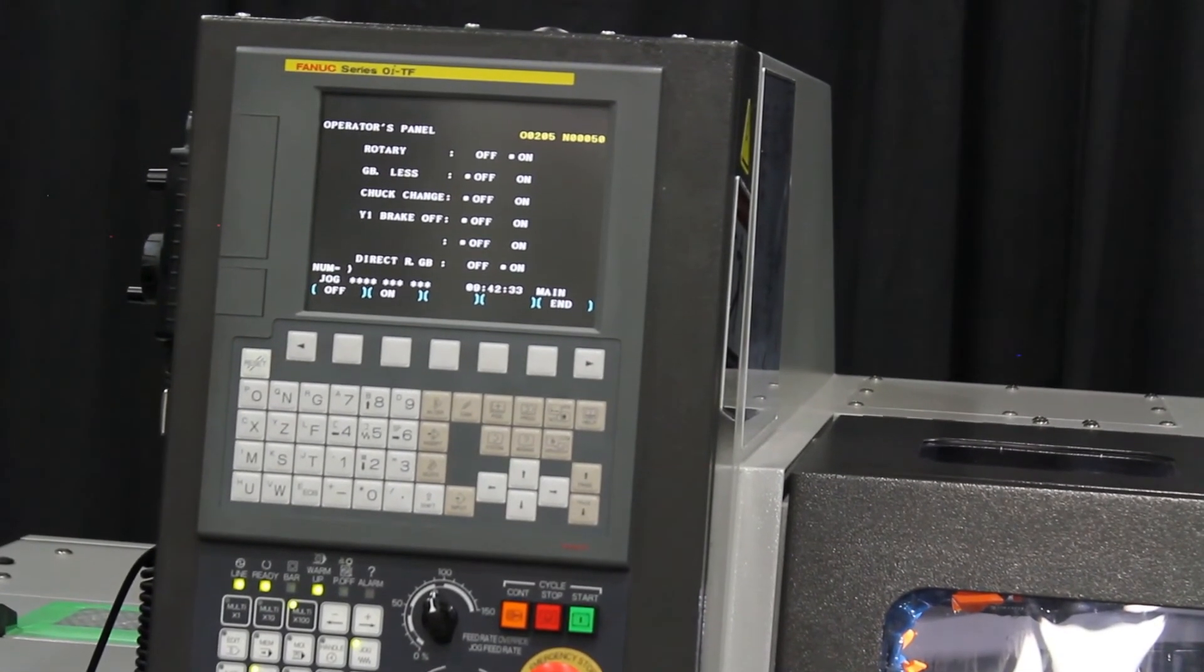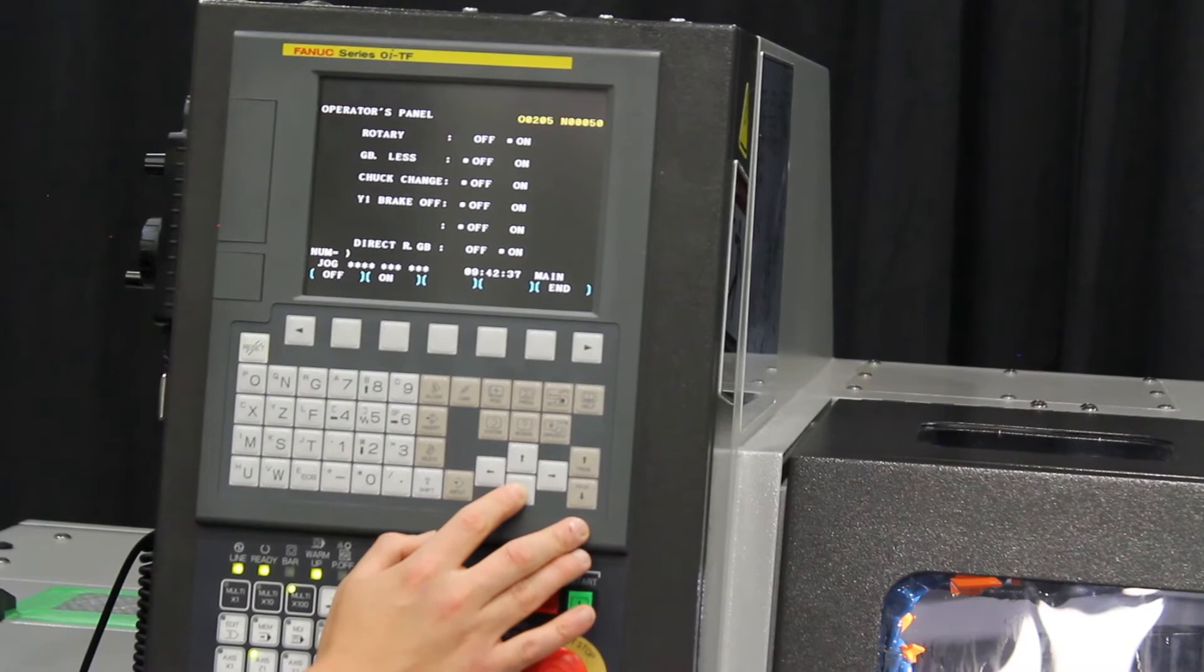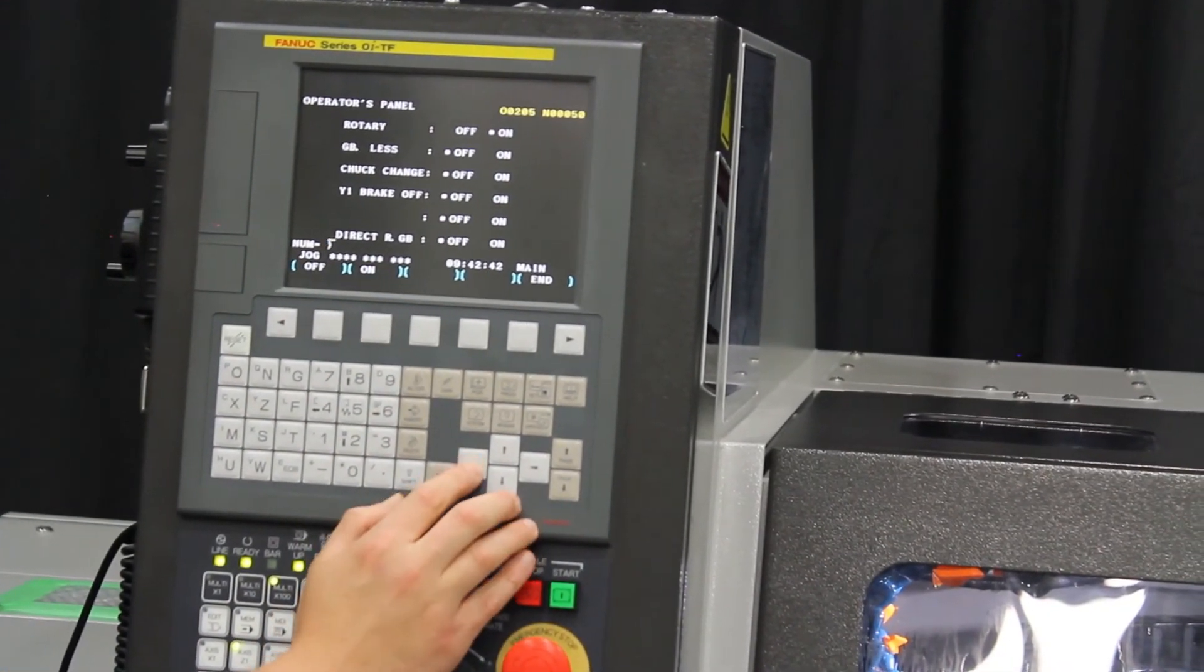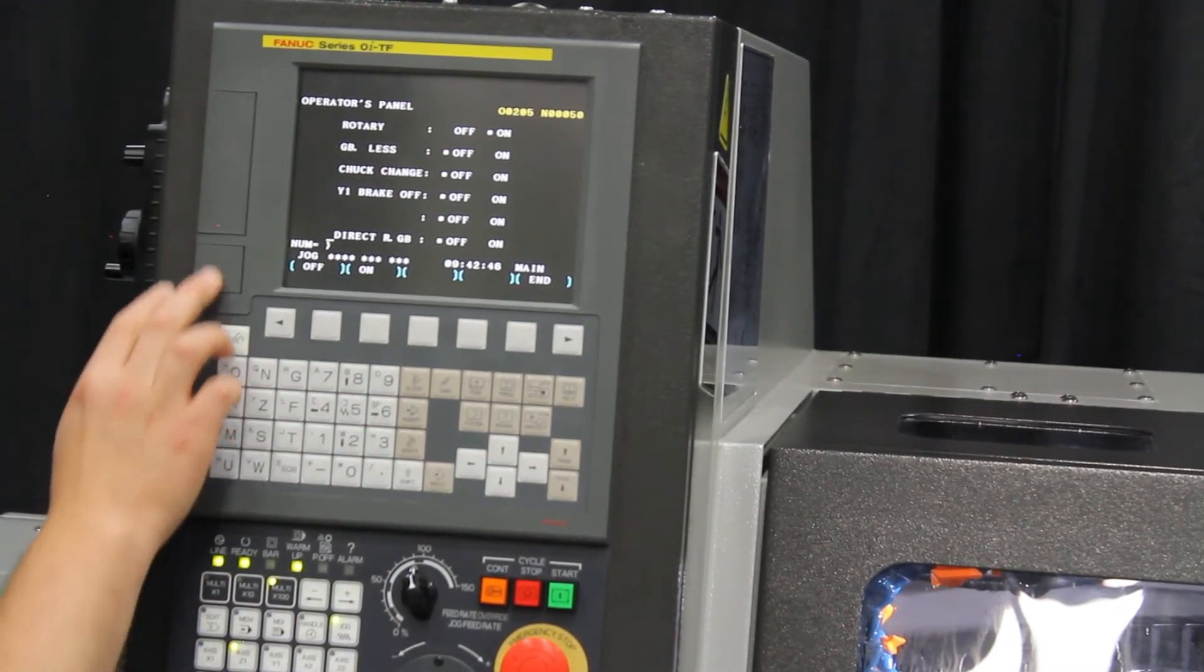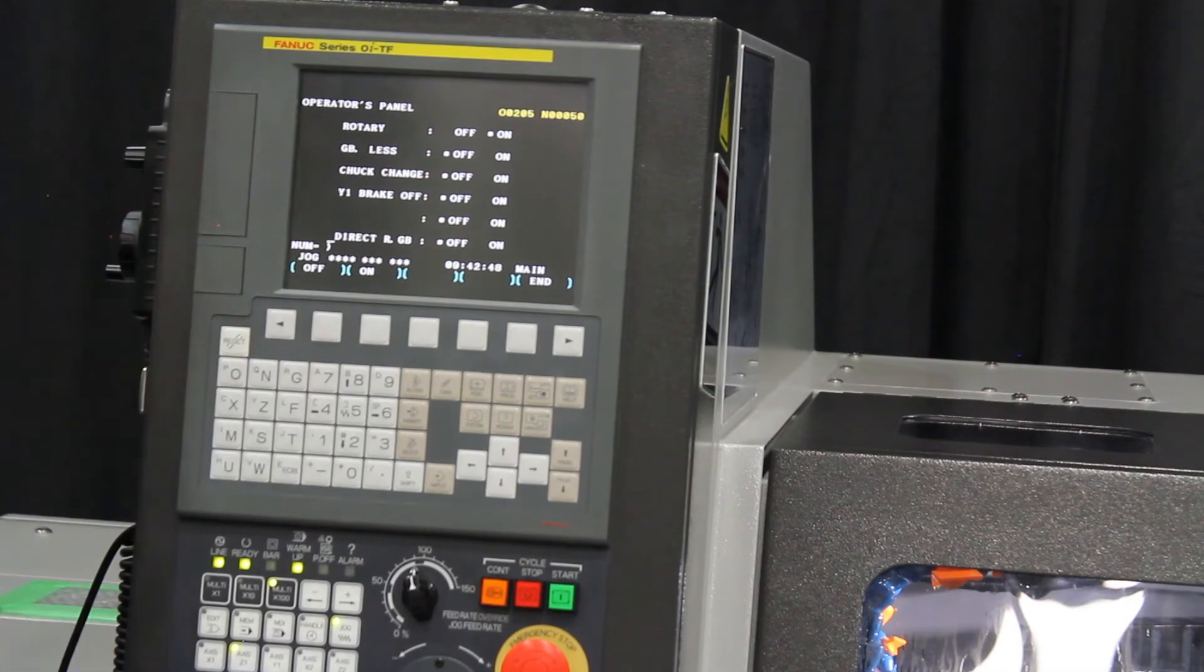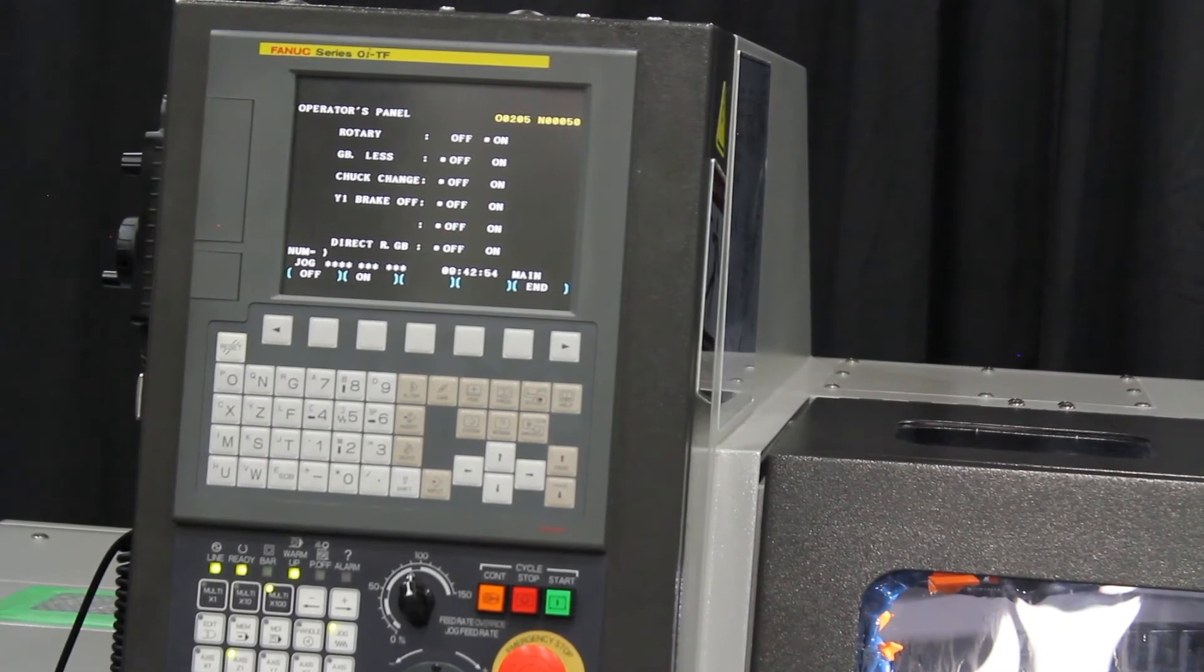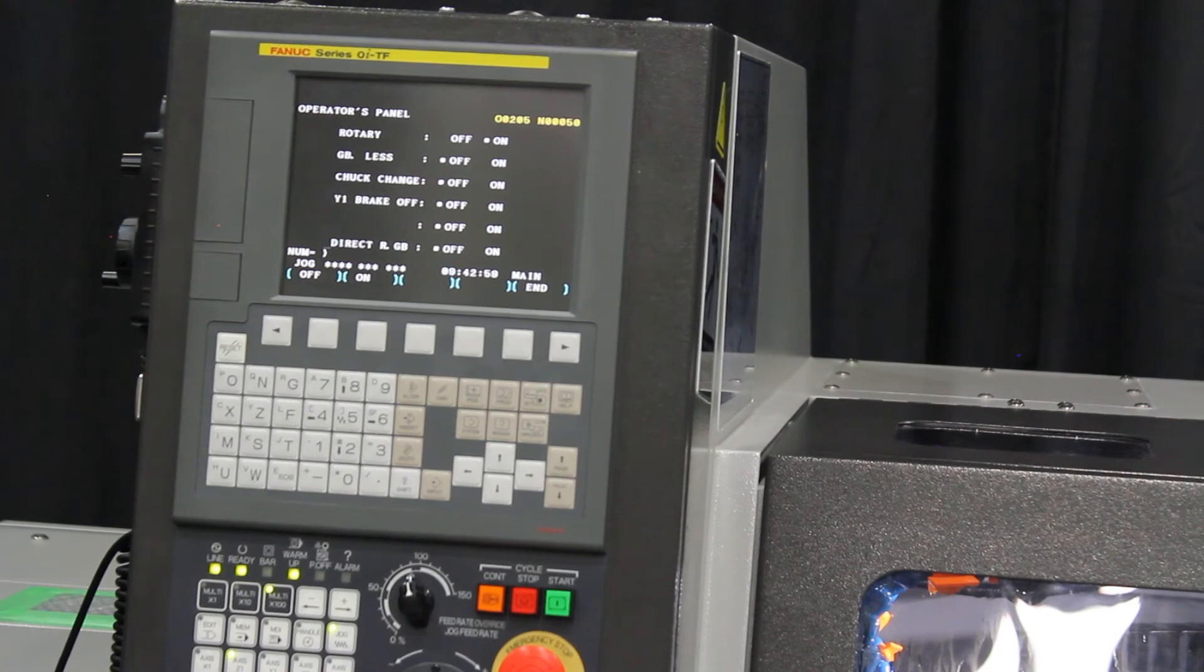In order to go into the cage driven guide bushing we have to go down to the direct rotary drag bushing and we simply turn it on. At that point the only option you will have to turn on is going to be rotary guide bushing. You are going to see that this is going to minimize the stroke and accommodate the unit to the 80mm that it has readily available to itself.